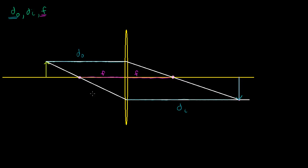To come up with the relationship, I'm going to draw some triangles. The whole strategy is to keep looking for similar triangles and then try to find ratios that relate these three things — d₀, dᵢ, and f — to each other.